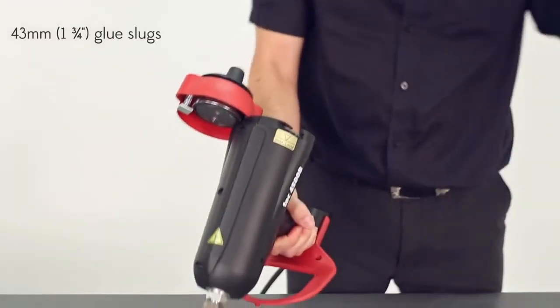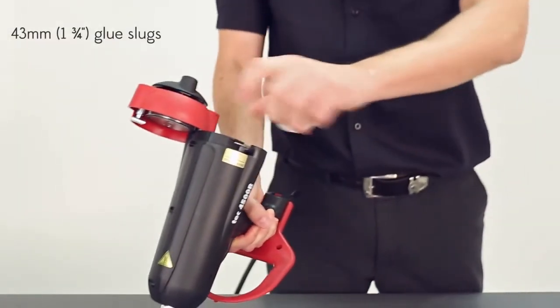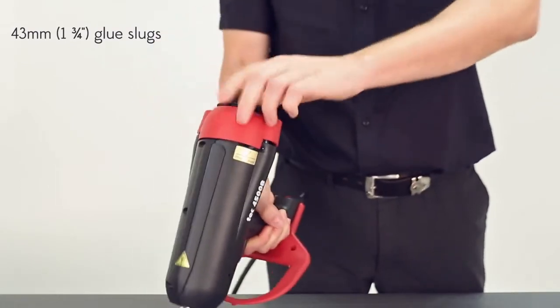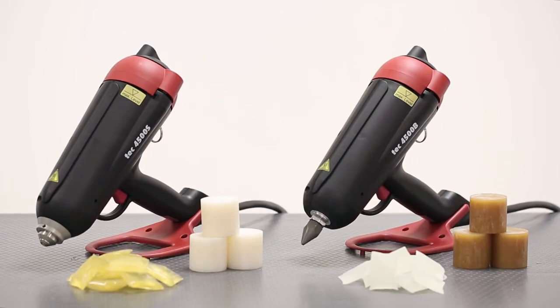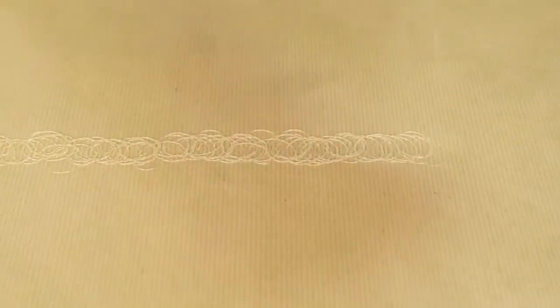To achieve the quickest glue meltdown, we recommend using TEC BOND 43mm glue cartridges. And for the best possible results when using the TEC 4500S, we would recommend using specially formulated spray-TEC adhesives.